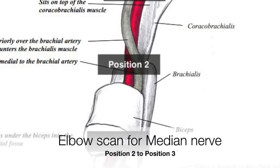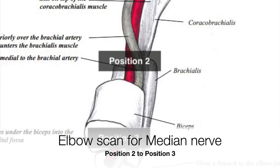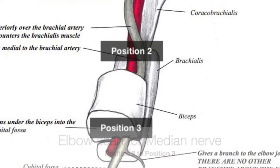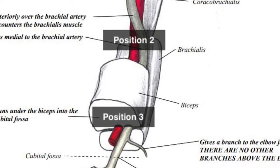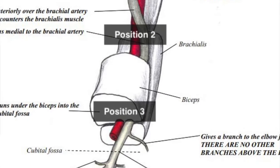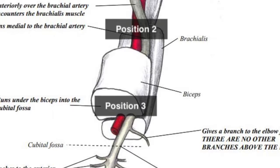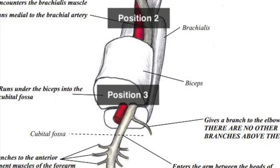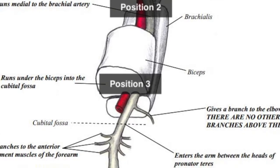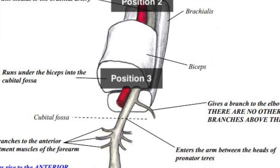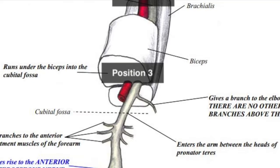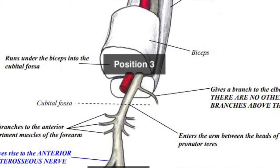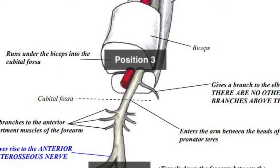Continuation of the scan of the median nerve from position 2 to position 3 at the cubital fossa reveals its relative medial position as compared to the brachial artery, and that it lies below or medial to the tendon of the biceps brachii.